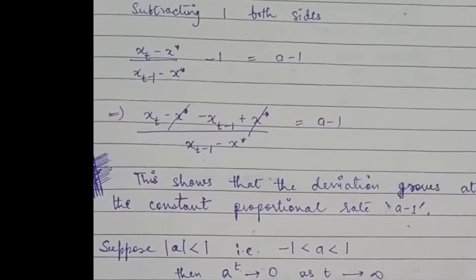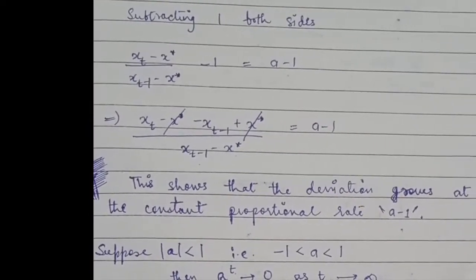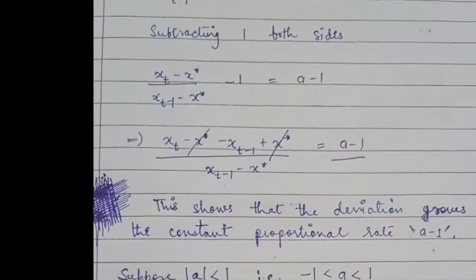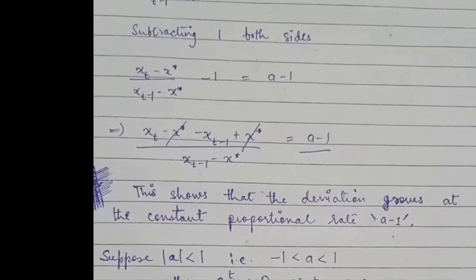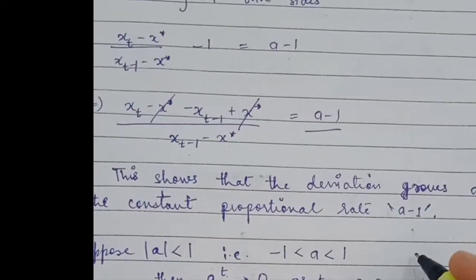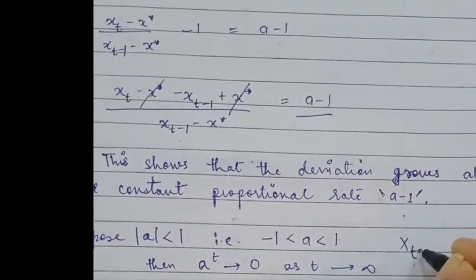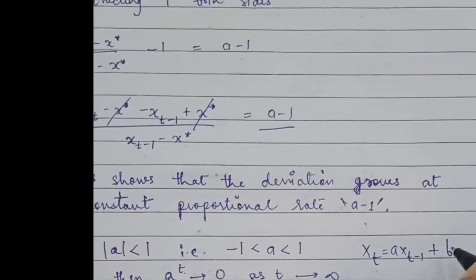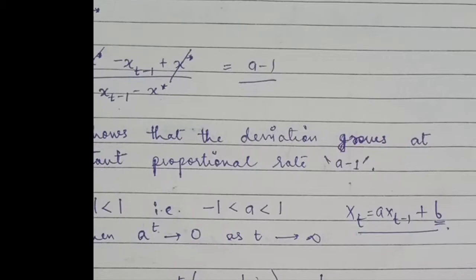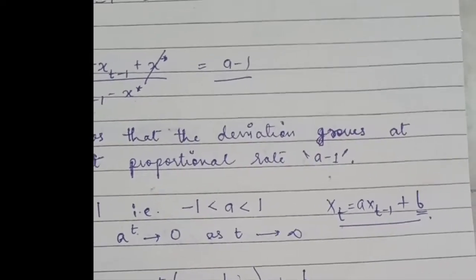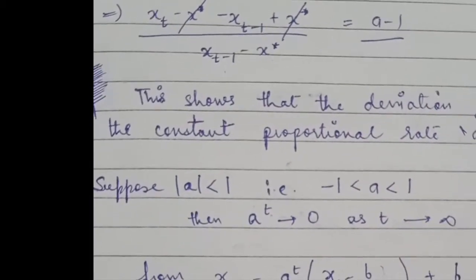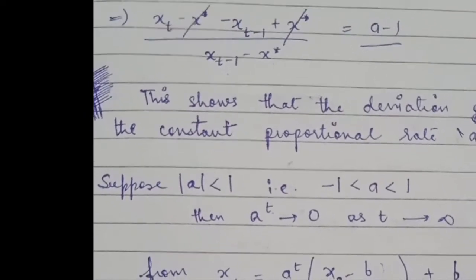Since we know that the rate at which the deviation from the equilibrium value is growing is the rate a minus 1, let us look at what happens for different values of a. We have been talking about the special case of the difference equation xt = a·xt-1 + b, where b is also a constant. The first case is when the mod value of a is less than 1.